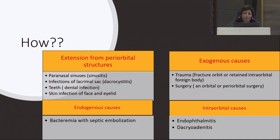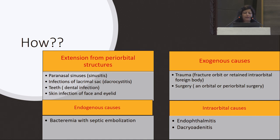The infection can spread from periorbital structures or paranasal sinuses. Infection of the lacrimal sac, dental infection, or facial/eyelid skin infection may progress to orbital cellulitis. Endogenous causes include bacteremia with septic embolization in immunosuppressed or transplant patients. Exogenous causes include trauma with infective foreign body or iatrogenic causes. Intraorbital causes may be endophthalmitis or dacryoadenitis.